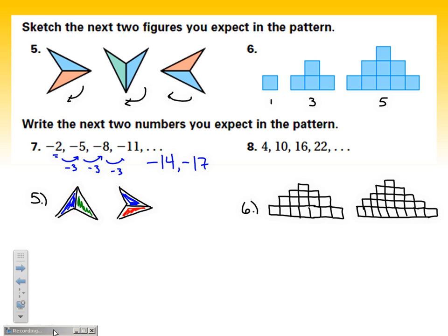And for number eight, here our pattern looks like when I go from four to ten, I add six. Ten to sixteen, I add another six. And I add another six there. So, I just need to keep that pattern going. Showing what happens to twenty-two when I add six to it, I get twenty-eight. And then when I add six to that, I get thirty-four. So, those should be the answers we came up with for those examples.